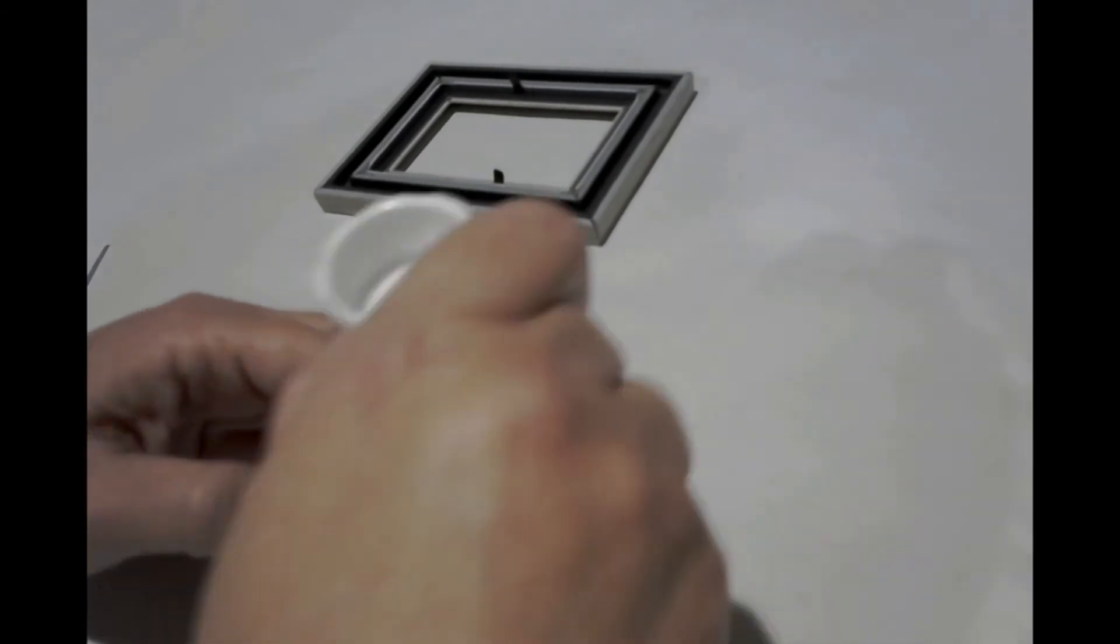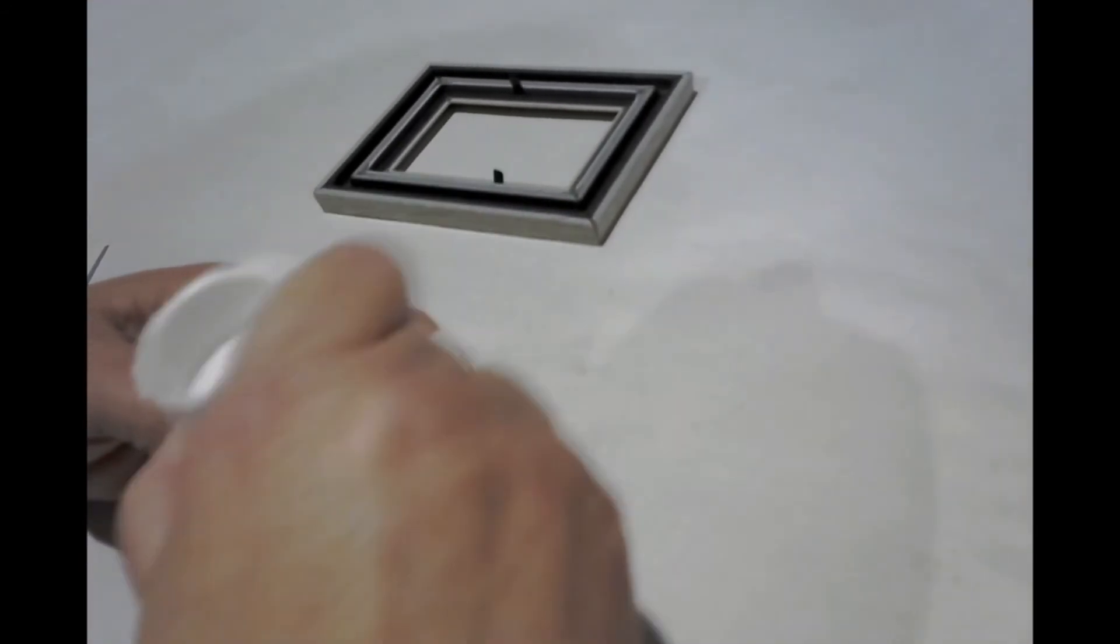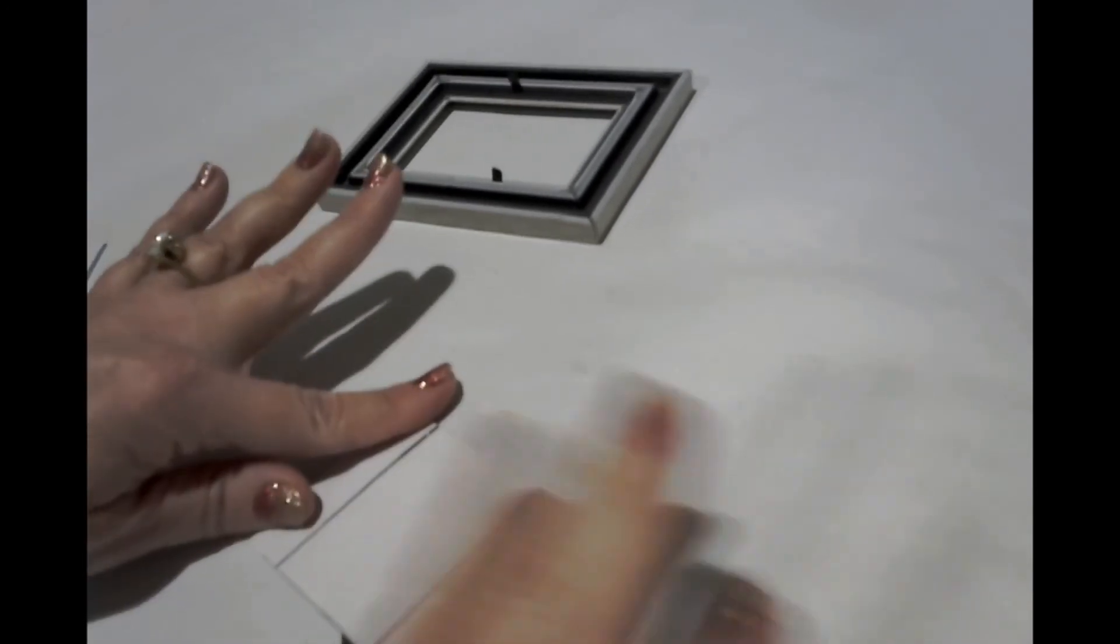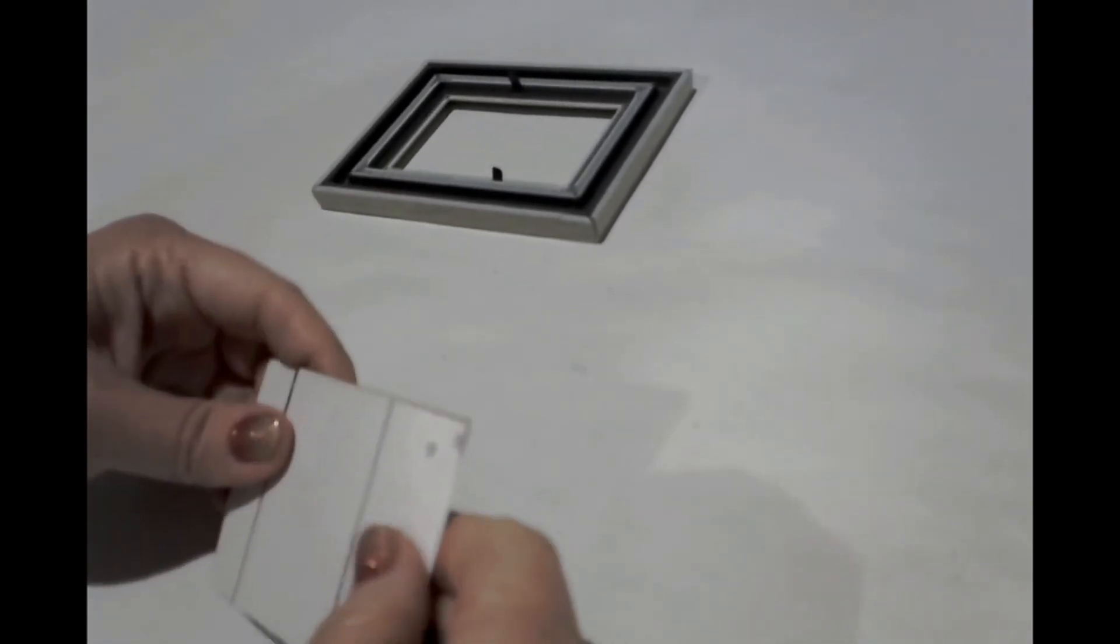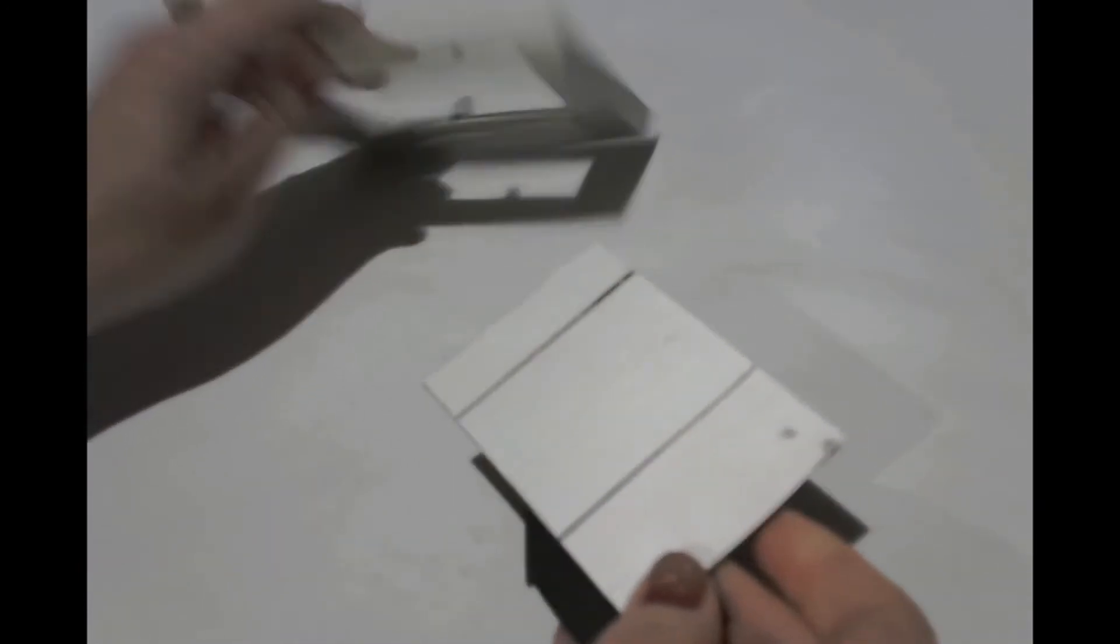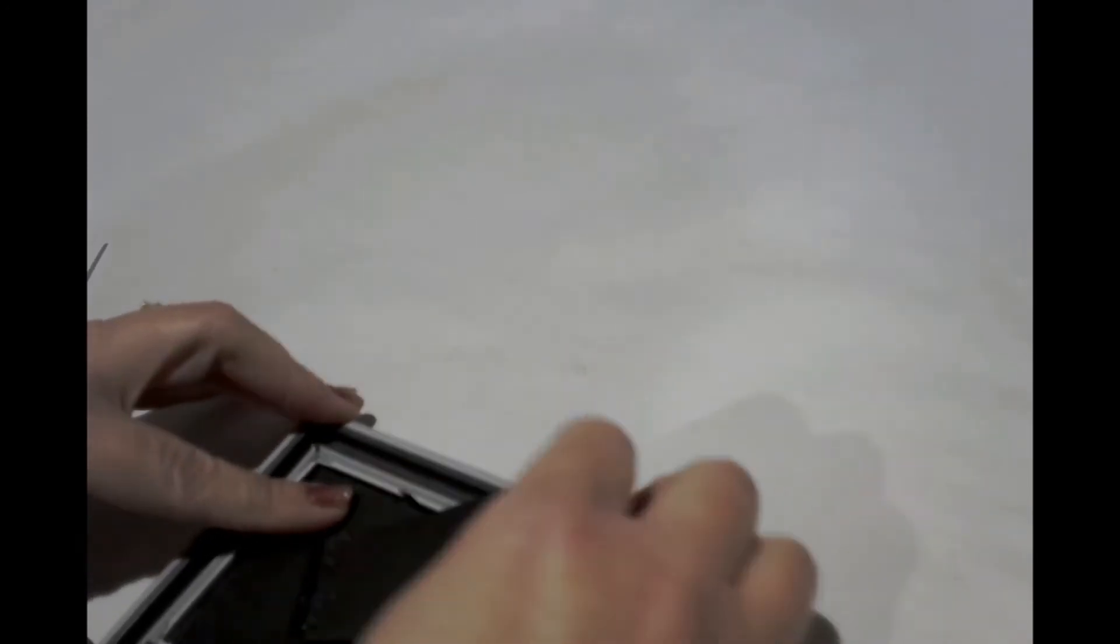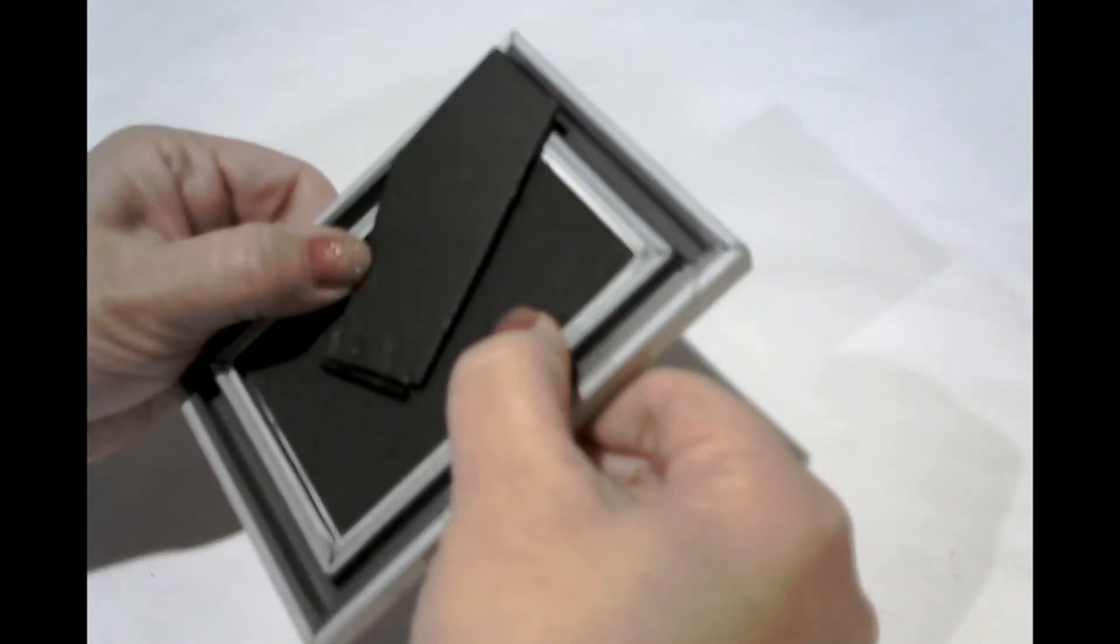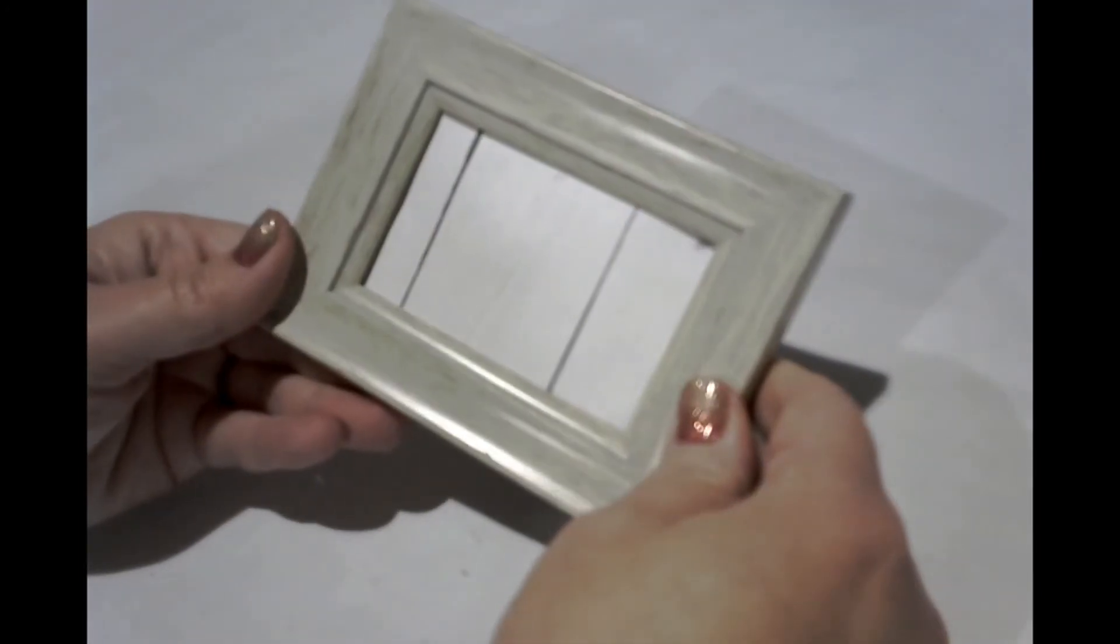And then I'm going to attach the paper directly to the frame back portion of the frame. And you can use as much glue as you need. You can also glue directly onto the frame itself, and then put your paper on top. And then you'll do that for as many frames that you have. And once you're finished, you're going to go ahead and turn it over and sort of back into the frame and push the little metal clips down.